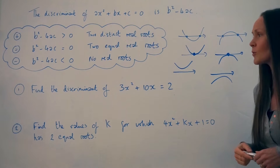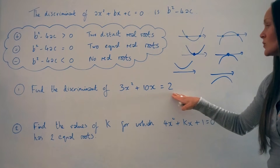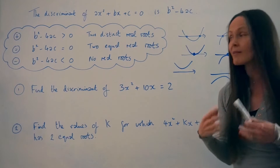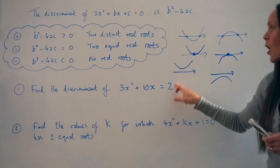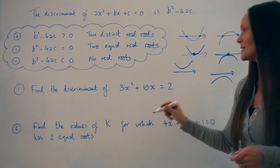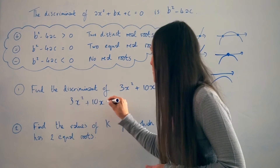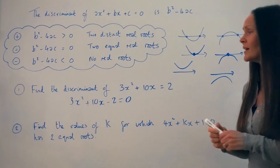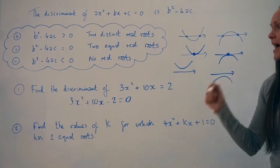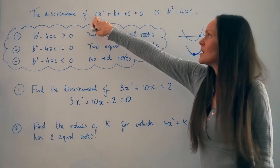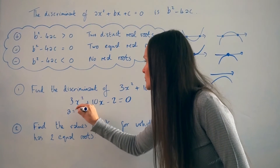In question 1, find the discriminant of 3x squared plus 10x equals 2. The first thing we need to do is rearrange the equation so that it equals zero. Moving the 2 over to the left-hand side changes it to a negative, giving us 3x squared plus 10x minus 2 equals zero. Now we can identify our three values a, b and c. Remember, a is always the coefficient of x squared, so here a equals 3.